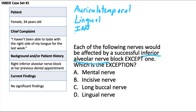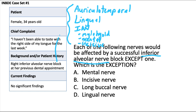The mylohyoid nerve branches off just before the IAN enters the foramen and provides motor branches to the mylohyoid and anterior belly of the digastric muscles. The mental nerve branches off and exits the mental foramen below the mandibular second premolar, supplying the anterior buccal gingiva, lower lip, and chin. The incisive nerve continues on after the mental nerve branches off to supply all pulps anterior to the mental foramen. Going through the answer choices, we can rule out the mental nerve, incisive nerve, and lingual nerve — all are part of that block.